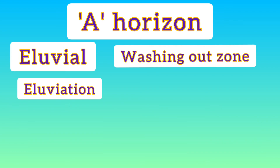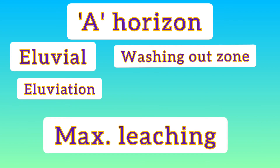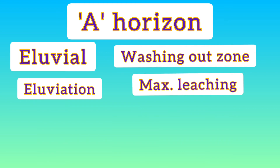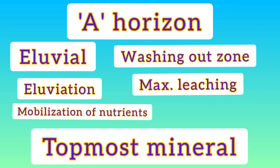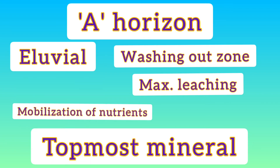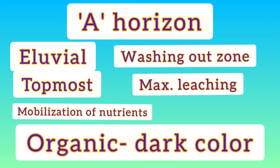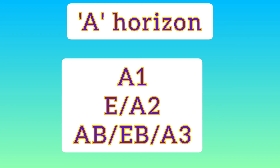Eluviation means transport — the transport of elements. So we can also call it the washing-out zone, or the zone of maximum leaching. Since transportation is taking place, nutrients are being mobilized, so mobilization of nutrients also takes place in this region. This is the topmost mineral horizon — it contains organic matter, which imparts a darker color. Therefore, the A horizon is darker than the other horizons.